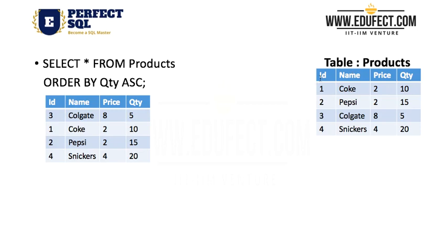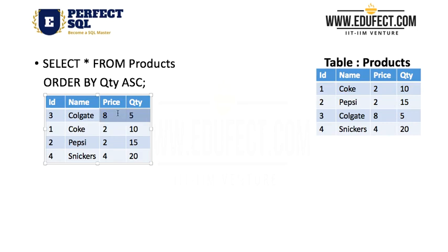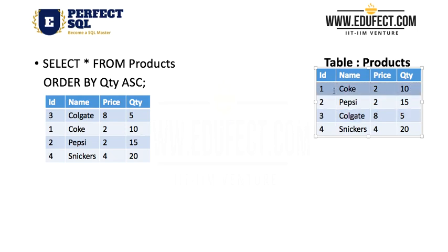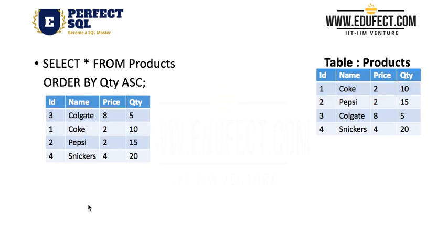Let's look at one more example. Here we have a table Products with columns ID, Name, Price and Quantity. We are saying select star from Products order by Quantity ascending. Quantity ascending means we start with the smallest, which is 5, then 10, then 15, then 20. So row 3, Colgate, 8, 5 becomes the first row. The second corresponds to 10, which is row 1, Colgate, 2, 10, and so on. This is OrderBy.